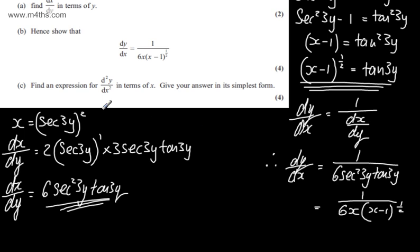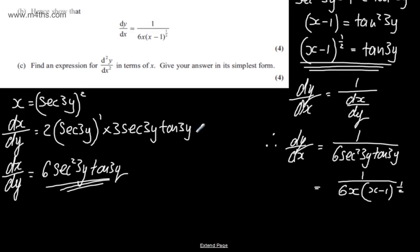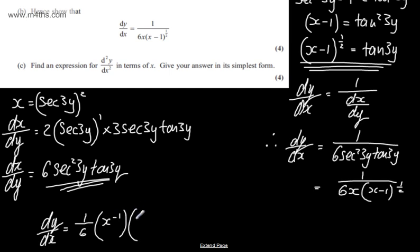In part C for four marks, we're asked to find an expression for d²y/dx² in terms of x in its simplest form. We need to differentiate dy/dx. One approach is to write dy/dx as (1/6) times x to the power of minus 1 multiplied by (x minus 1) to the power of minus one half, and use the product rule.